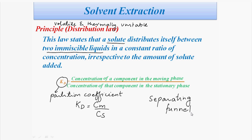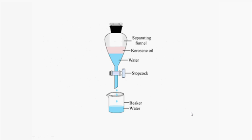The most common laboratory example of solvent extraction is ether extraction, used to separate the products of organic synthesis from water. Some organic products are naturally present in the aqueous phase, so we select a solvent like ether in which the organic component is more soluble. We take the two solutions in a separating funnel and allow them to separate. The inorganic impurities remain in the aqueous phase, while the organic compound moves from the aqueous layer to the ether layer. We then separate the ether layer and evaporate the ether to get the pure organic product.